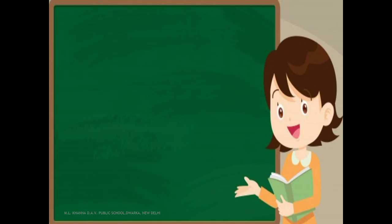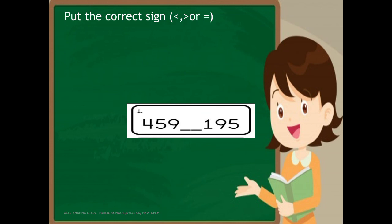Let us practice what we have learned by comparing more numbers. Fill in the blank with either greater than, less than, or equal to. First question: compare 459 and 195. Start by comparing the leftmost digit at the hundreds place. 4 is at the hundreds place in 459 and 1 is at the hundreds place in 195. 4 hundreds are greater than 1 hundred, so 459 is greater than 195.